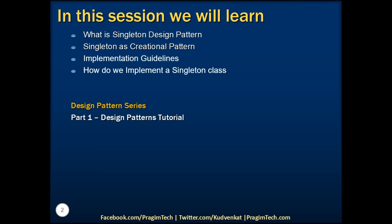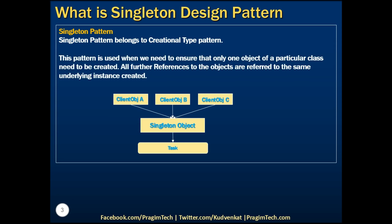Singleton pattern belongs to the creational type pattern. As mentioned in part 1, the Gang of 4 identified 5 design patterns that belong to the creational design type category. Singleton is one among them, and the rest are factory, abstract factory, builder, and prototype patterns. Creational design type deals with object creation mechanisms — it explains the creation of objects in a manner suitable to a given situation.